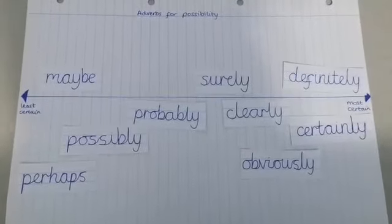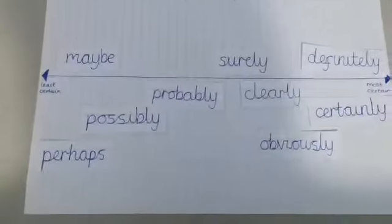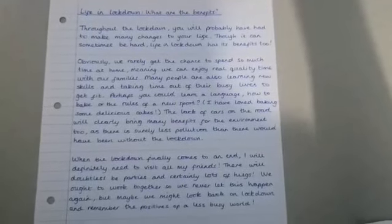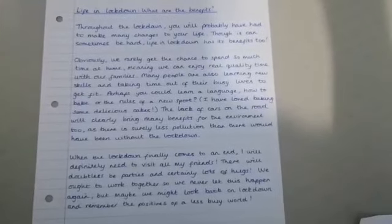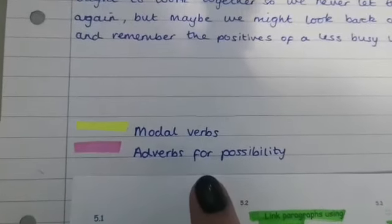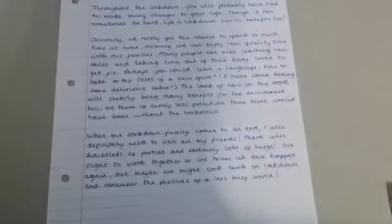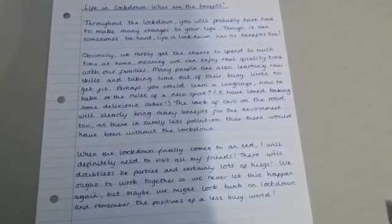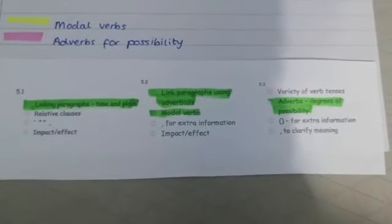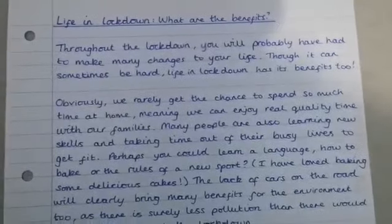Now I'm going to show you in a piece of writing how the modal verbs for possibility and these adverbs for possibility work together. I've done a short piece of writing about life in lockdown and the benefits of lockdown. I'm going to highlight the modal verbs and the adverbs for possibility — they sort of pair together. Remember, adverbs describe verbs, so you can use your adverbs for possibility alongside your modal verbs. It's worth pointing out that I've written this to show lots of different adverbs, so you probably wouldn't use this many in a normal piece of writing.